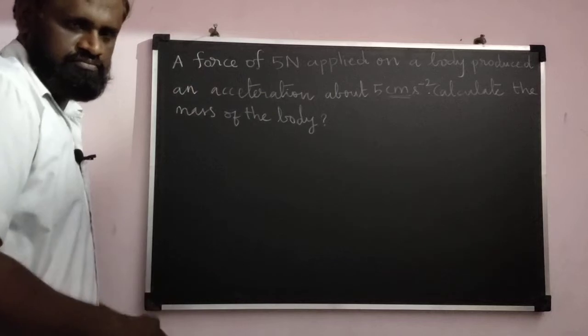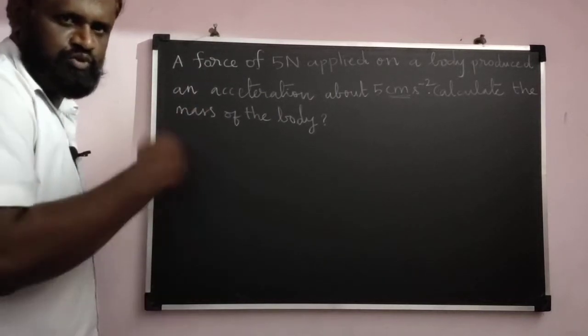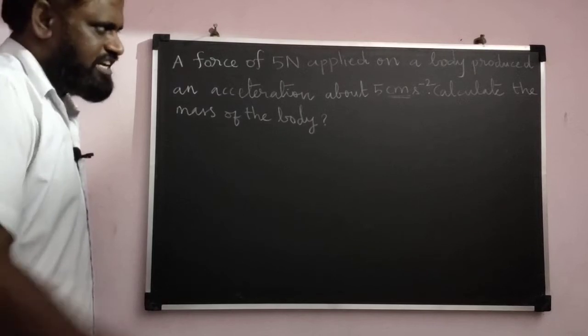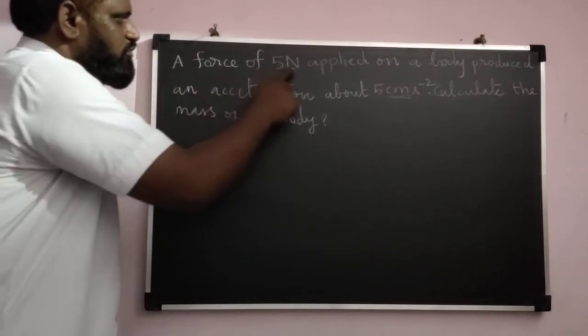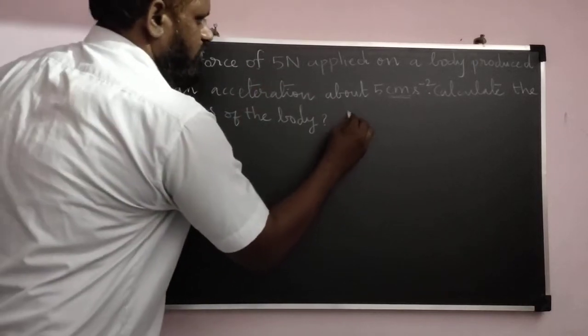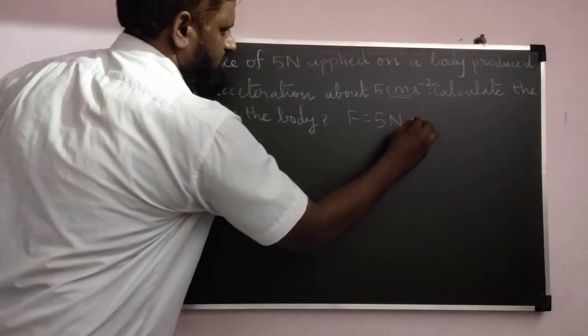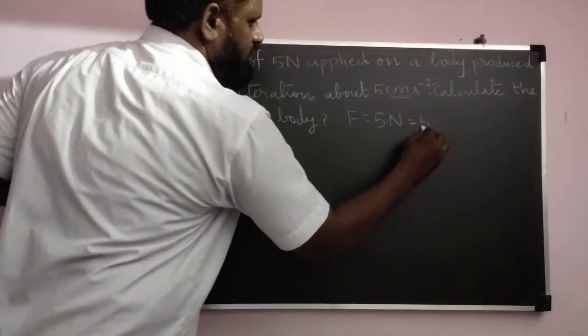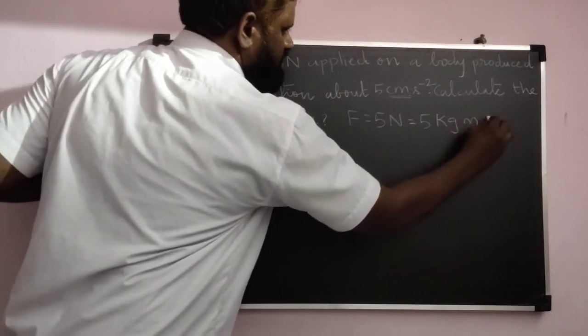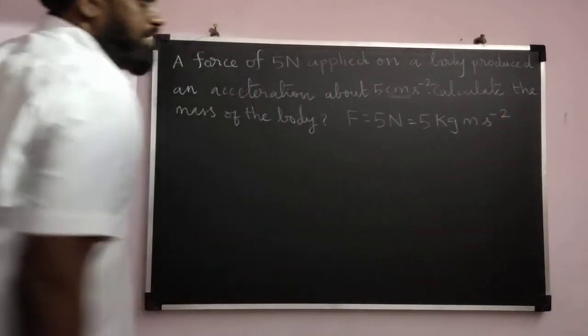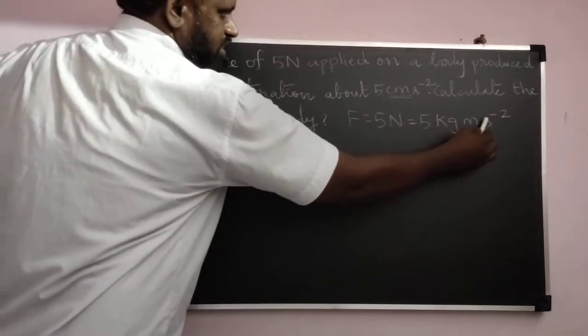It's a little bit interesting problem, so we'll go straight into it. What is the problem? A force of 5 Newton is given, F equals 5 Newton. Convert the Newton into other units also: kilogram meter second power minus 2. So Newton is kilogram meter second power minus 2.